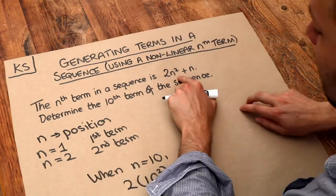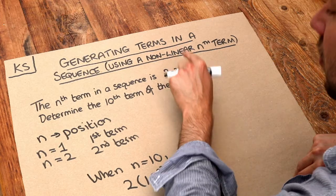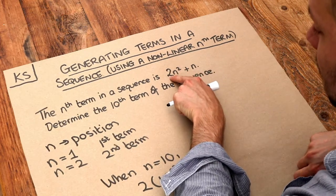And remember 2n squared means 2 lots of n squared. It doesn't mean (2n) squared. So we've got to square the n first and then times it by 2.